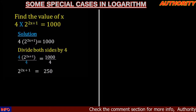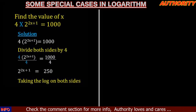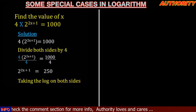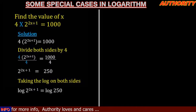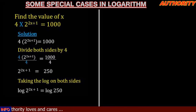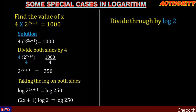From here, let's take the log on both sides. So taking the log on both sides, we're going to have log of 2 raised to the power 2x plus 1 equal to log 250. Bringing 2x plus 1 down, we get: 2x plus 1 times log 2 equals log 250. Now let's divide both sides by log 2.